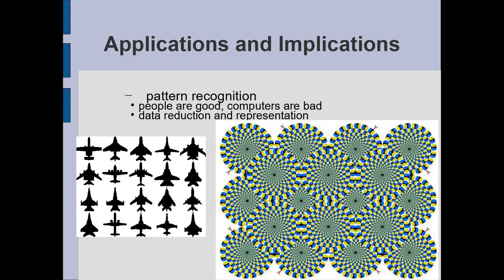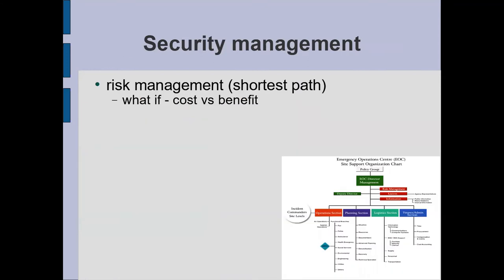The other thing we are really good at, and traditional computers are not, is pattern recognition. There's a picture of airplanes — you immediately look at that and without even fully concentrating, you probably immediately think 'airplanes,' and then possibly 'military airplanes.' Whereas it would take a computer a long time to figure that out. People are good at this; computers are bad. But quantum computers are going to be much better at recognition, and so that type of thing is going to be much easier with quantum computers.